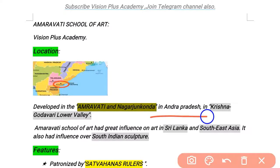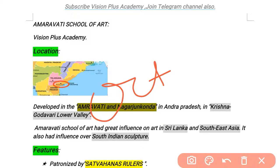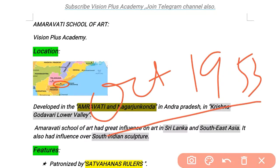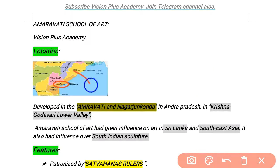Andhra Pradesh was the first state of India, formed in October 1953. The Amaravati School of Art developed in Amaravati and Nagarjunakonda, in the region between the Krishna and Godavari rivers. If we talk about the Eastern Coast, there are four most important rivers.